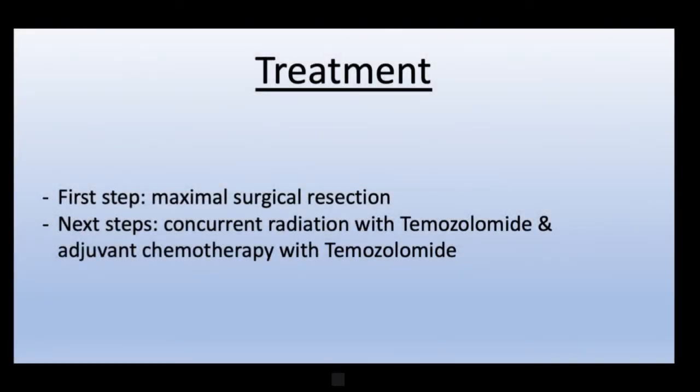When treating glioblastomas, current literature seems to agree on a treatment plan. The first step taken is maximal surgical resection. This step is often tricky, as the tumors may be located in spaces of great importance. For instance, if the tumor is somewhere near areas necessary for motor function or speech control, surgery is risky. However, many studies have shown its importance despite its great risk. The surgical resection is then followed by a combined radiation and chemotherapy treatment plan, utilizing temozolomide.